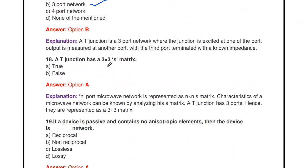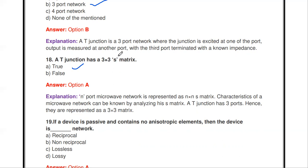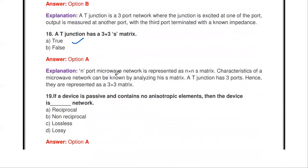Next question: a T-junction has a 3×3 S-matrix — true or false? It is true. The T-junction is a three-port network, and for an N-port network the S-matrix size is N×N. Therefore, for a three-port network the S-matrix size is 3×3.